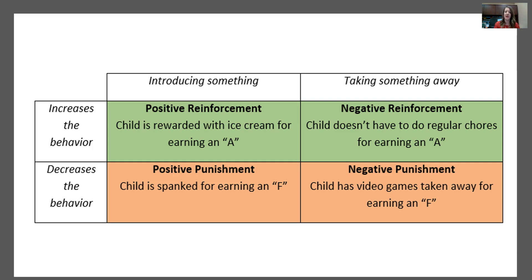When we put all this together, I created this matrix to show what this looks like. You have positive reinforcement and positive punishment — that means you're introducing or adding something. Reinforcement increases the behavior, and punishment decreases the behavior. Reinforcement in green is what you want to do to encourage and increase a behavior, and punishment is what you want to do to discourage and reduce a behavior — just two different ways of doing it.